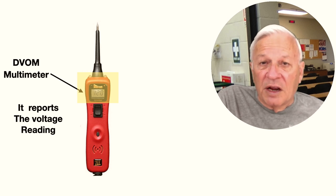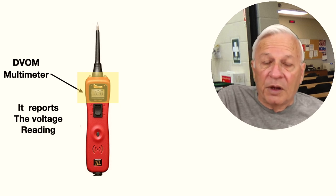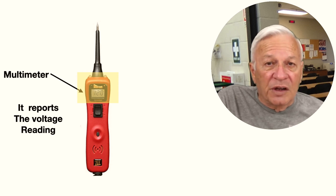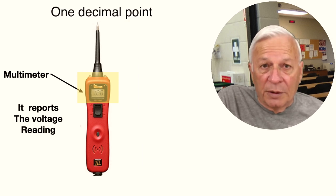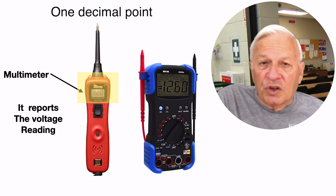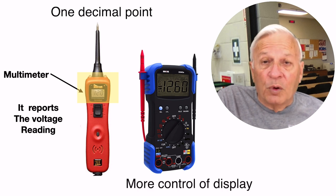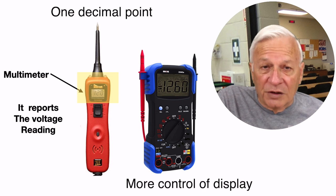Other than the sensor and energizer, the power probe is also a digital multimeter, just like a DVOM. In fact, it is actually a DVOM. It reports the voltage reading. Now, the big difference is that you only have one decimal point. With a traditional DVOM, you do have more control of the display, and it should be used for your more advanced diagnostics.